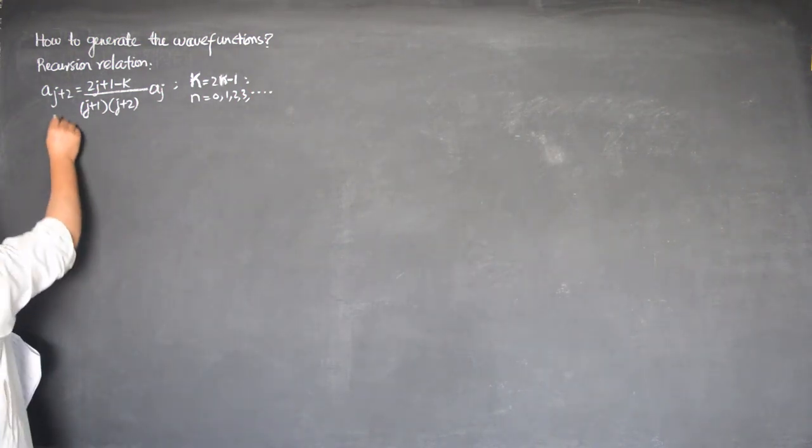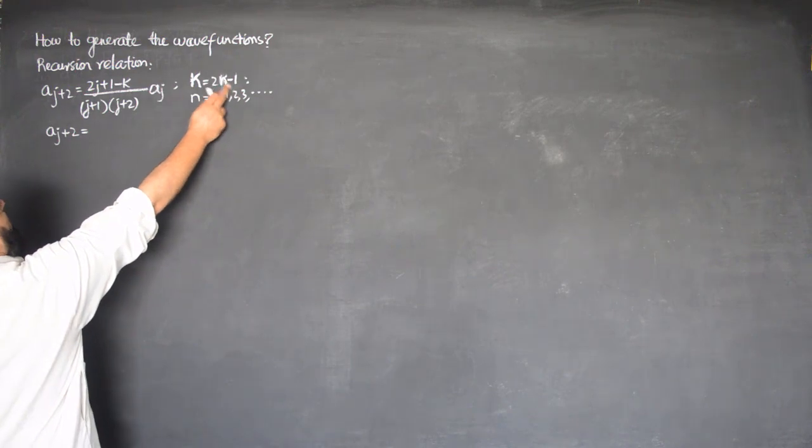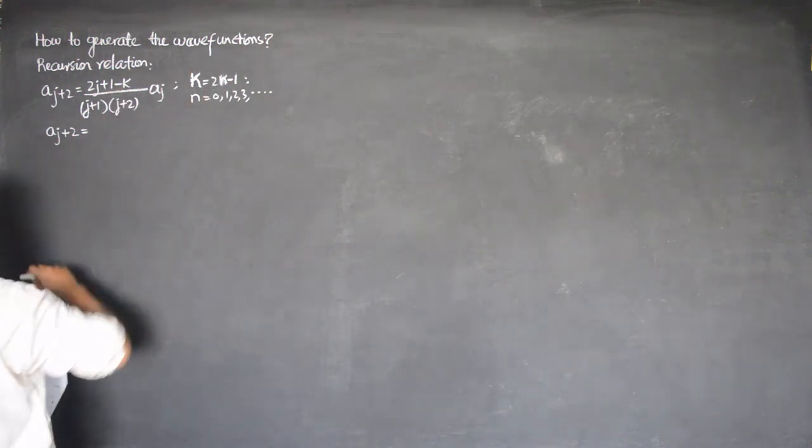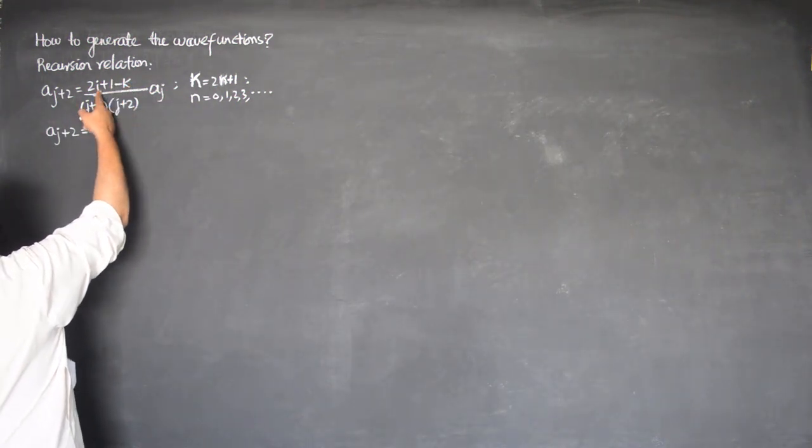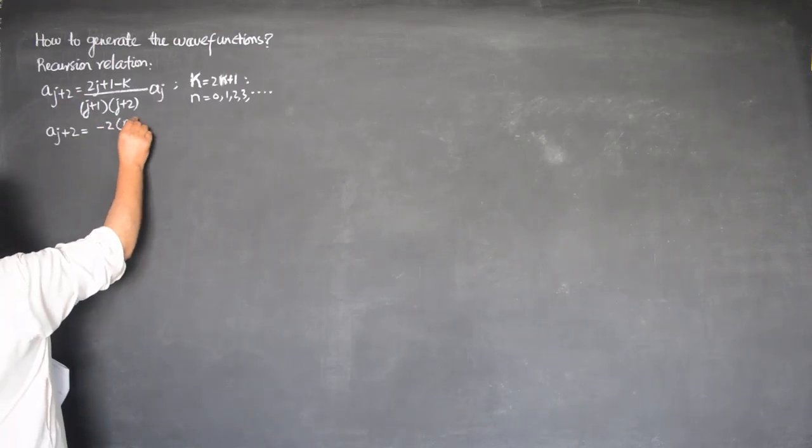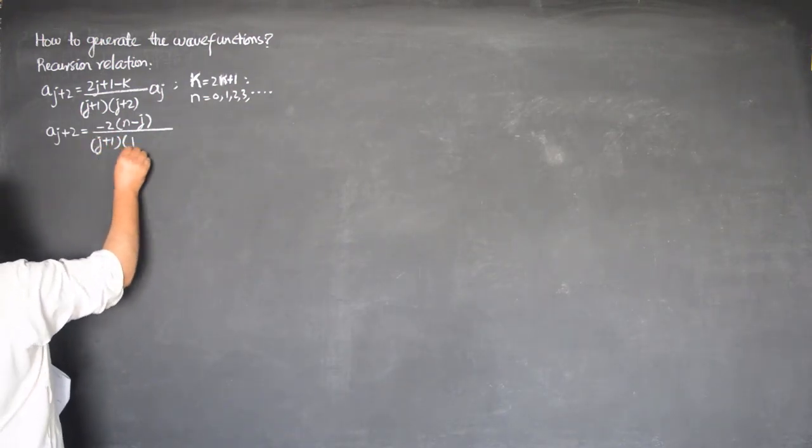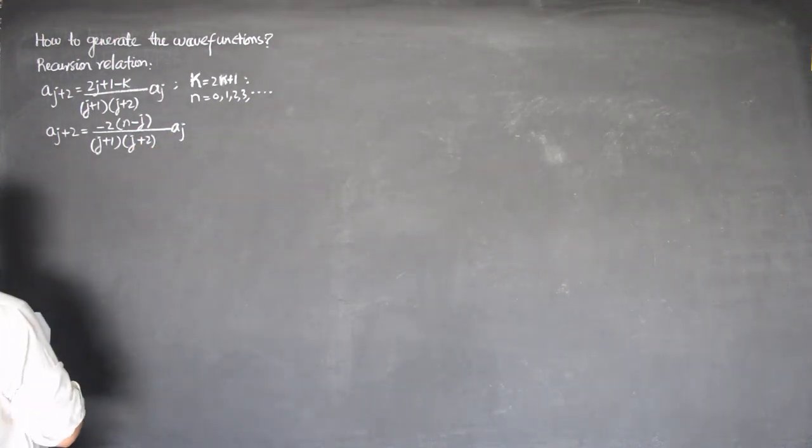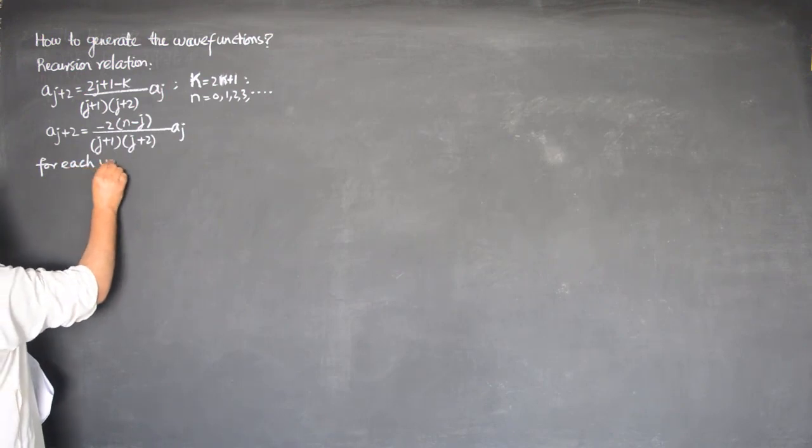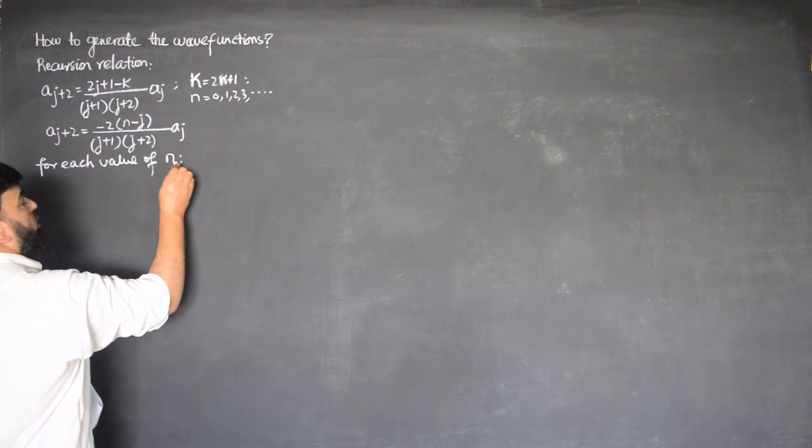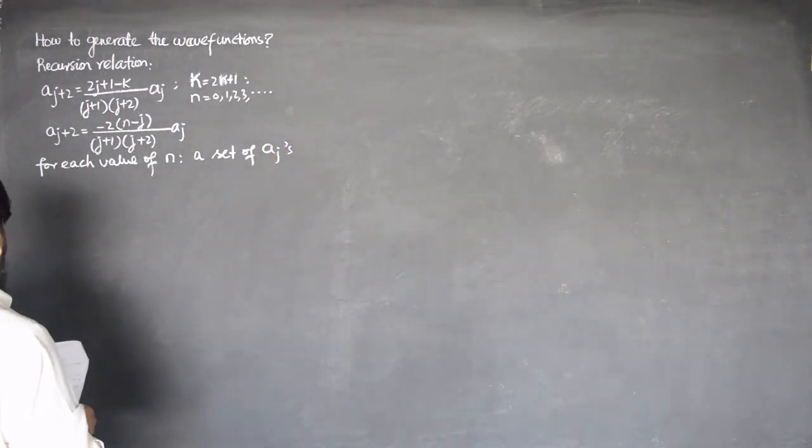So we will have our equation, this a_j, the recursion relation will convert. If for k I put 2n minus 1, it will give me -2(n-j)/(j+1)(j+2) times a_j. Now we will have to keep in mind that for each value of n, we are having a set of a_j's, all the coefficients.